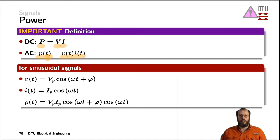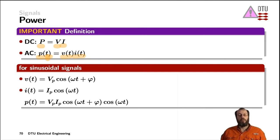Therefore, we can use them for deriving any other things, like in this case the power. And if we want to apply them later to a different signal — say a square wave or a triangular wave or whatever — we can use the Fourier series to apply to that signal and simply superimpose those waveforms before calculating the power for each of those harmonics.